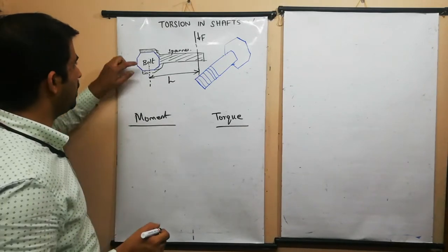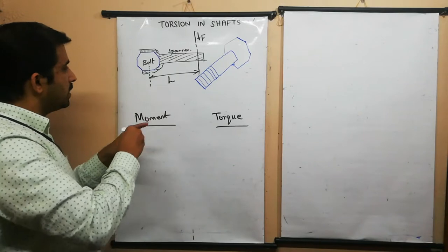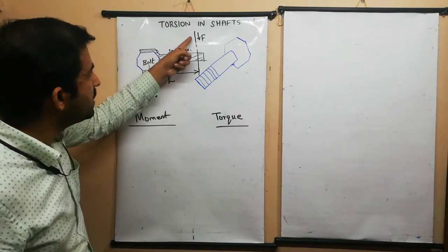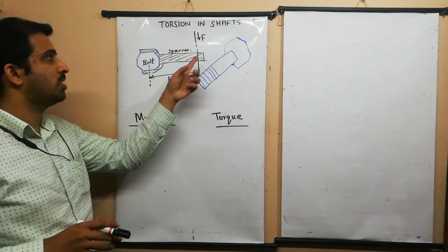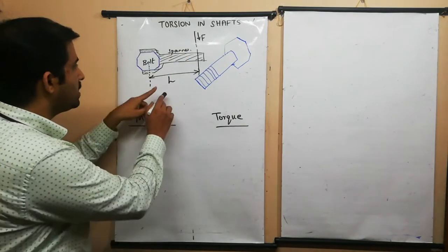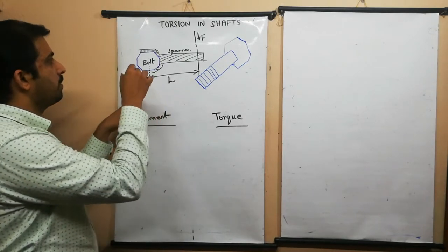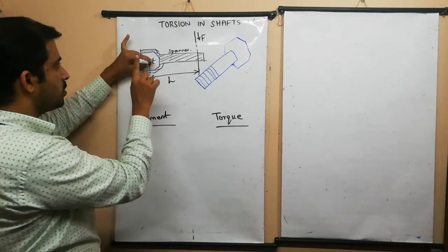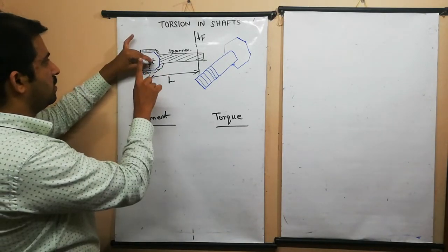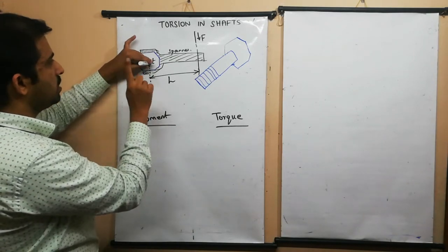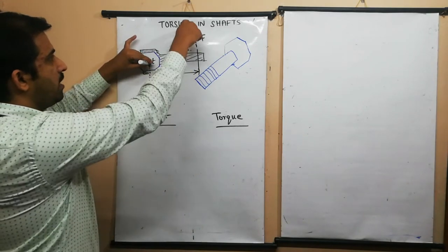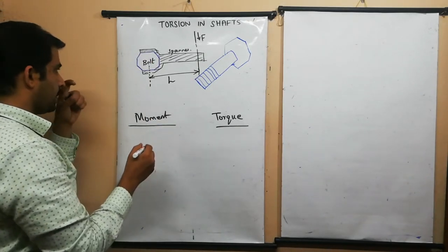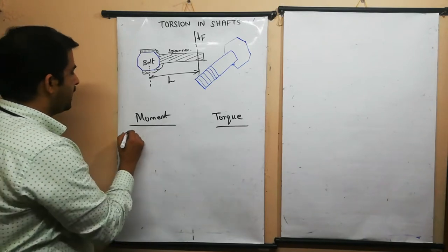To understand moment, consider a bolt and a spanner. To turn the bolt we apply a force on the spanner. This line indicates the line of action of the external force applied. The length L indicates the perpendicular distance from the bolt's longitudinal axis to the line of action of the force.